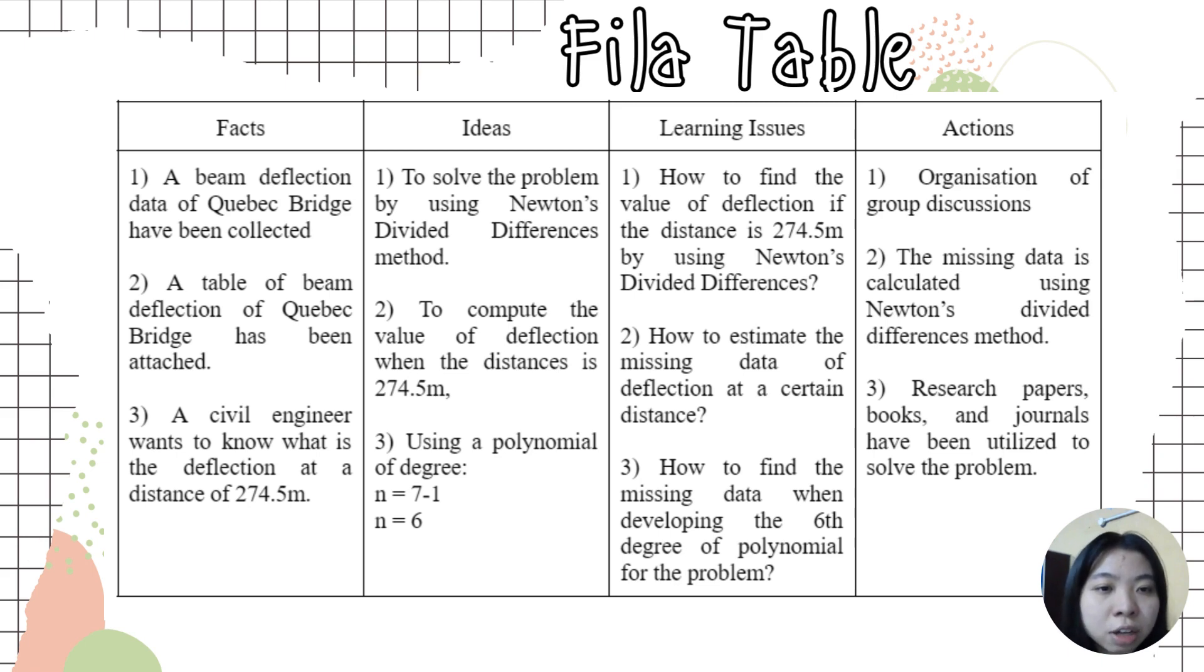For the action, the organization of group discussion and the missing data is calculated using Newton's Divided Difference methods. Research papers, books and journals have been utilized to solve the problem.